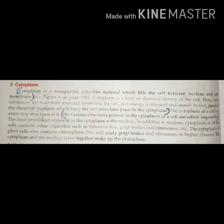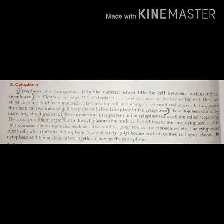All of our chemical reactions take place in the cytoplasm. There are very small structures present in the cytoplasm which are called organelles. The organelles present in the cell include nucleus, mitochondria, Golgi bodies, and ribosomes. In plant cells, chloroplasts are also present, whereas animal cells do not have chloroplasts. We will discuss these in detail.